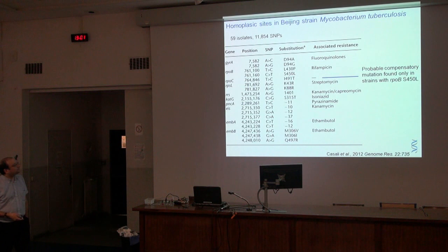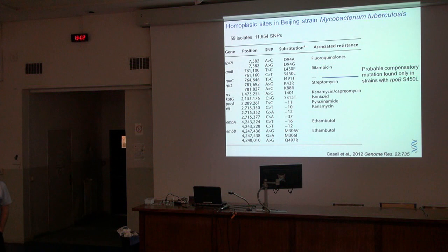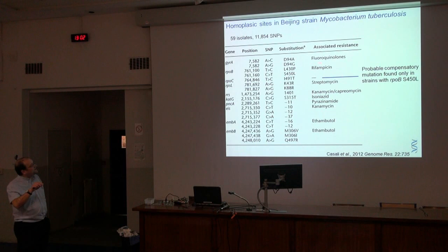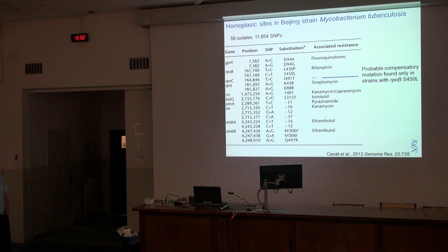We can use this method to look for evidence of recent selection in other organisms. This is 59 isolates of Mycobacterium tuberculosis from the Beijing clone. You can see nearly 12,000 SNPs, virtually all fitting a single tree. Only a very few SNPs don't fit that tree — very clear evidence of selection. We see drug resistance SNPs, but also a SNP not known to underlie drug resistance that only appears when an RPOB mutation is present. We believe this is a compensatory mutation giving additional fitness when point mutations for rifampicin resistance occur.